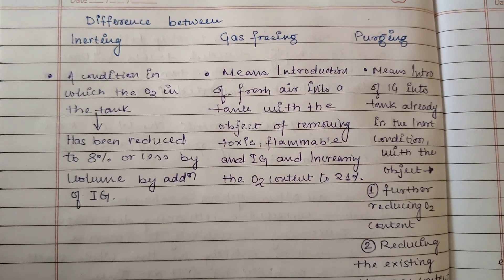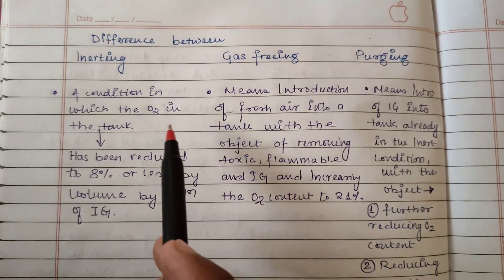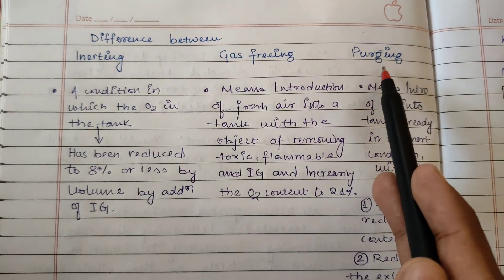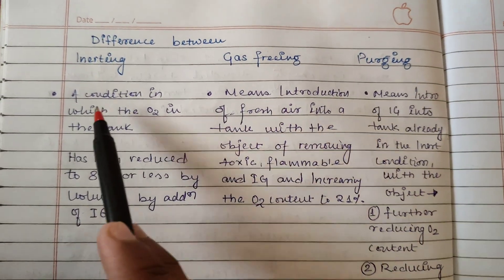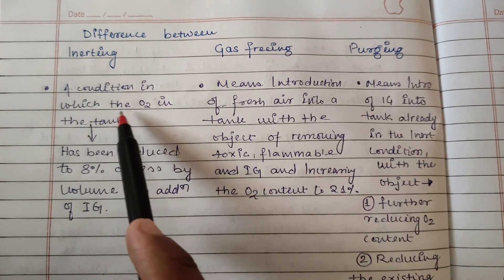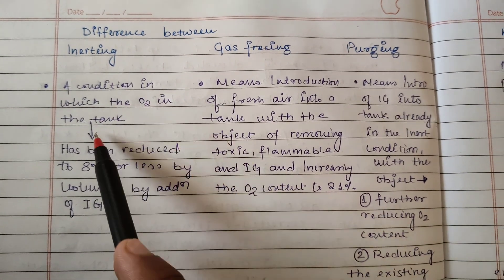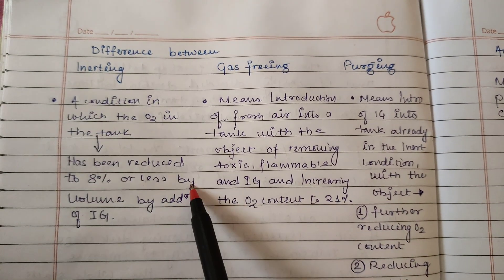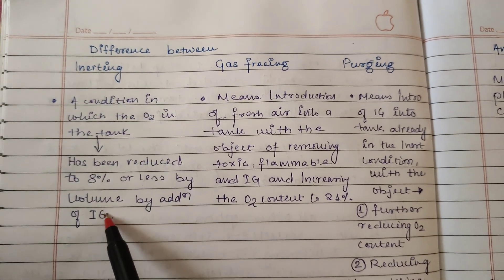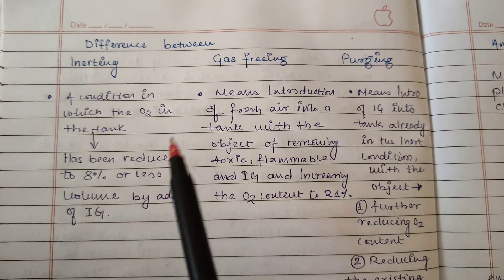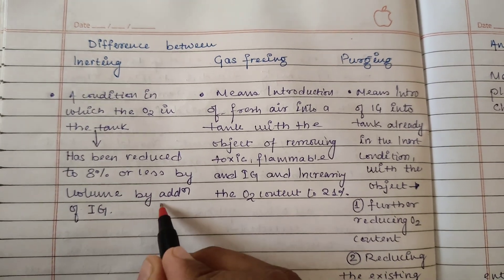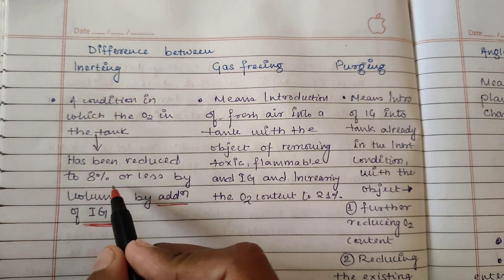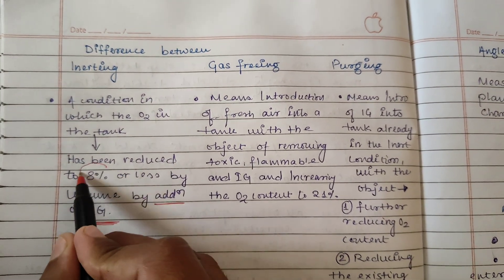Hello and welcome. In this video I'm going to discuss the difference between inerting, gas freeing, and purging. Inerting is a condition in which the oxygen in the tank has been reduced to 8% or less by volume by the addition of an inert gas.